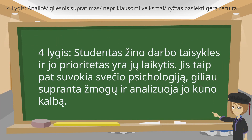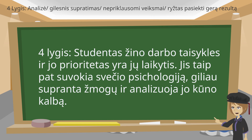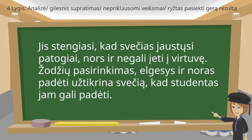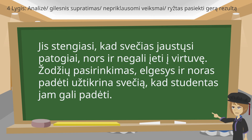The student is aware of the work area rules and his priority is to follow them. However, he is also perceptive about the psychology of the guest, having a deeper understanding of the person and analyzing his body language. He reminds the guest about the health and safety rules so as to provide a reason why he is not allowed in the kitchen. His verbal communication is clear but adamant. He also attempts to comfort the guest even though he cannot go in. His word choices, mannerisms and willingness to help are a reassurance for the guest that the student will take it further.